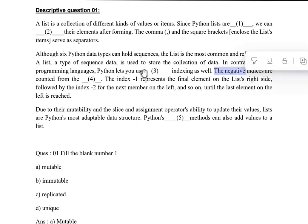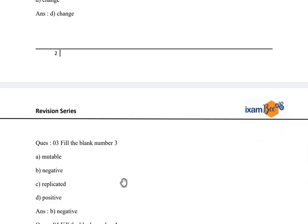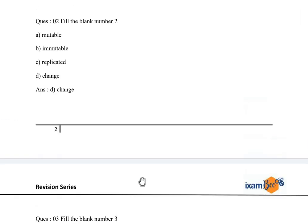So now this particular indexing is talking about something else, and here the next line is giving you the answer that it is talking about negative indexes. So here the answer in blank number three will be negative. If you see the question, the answer is negative only, because in Python with the list you can have negative indexing as well. That is the unique feature that is provided for the slicing and dicing of the list.